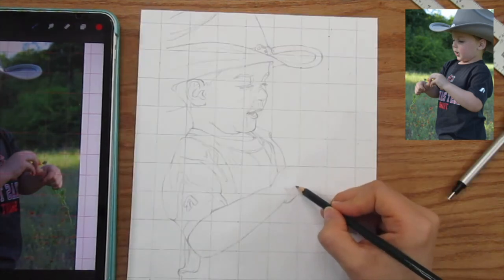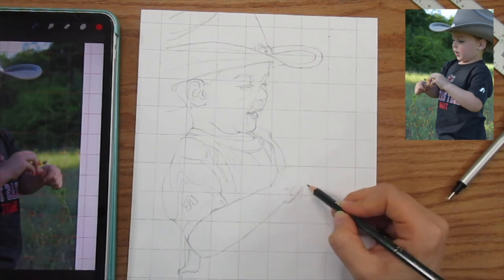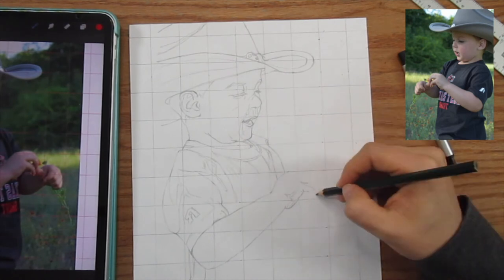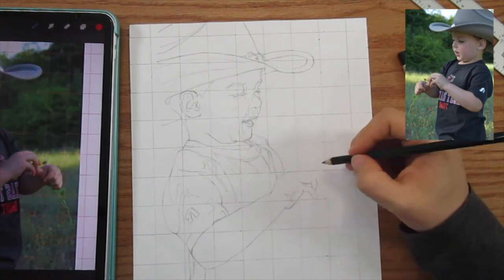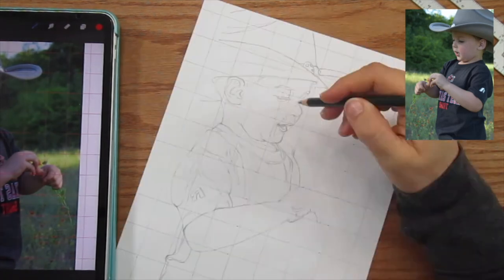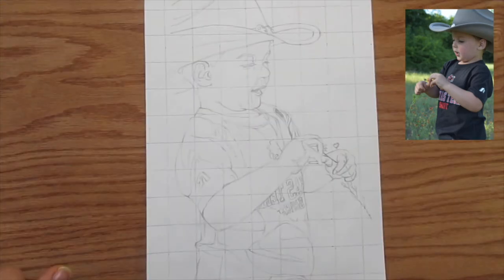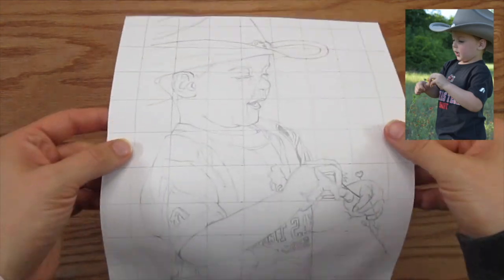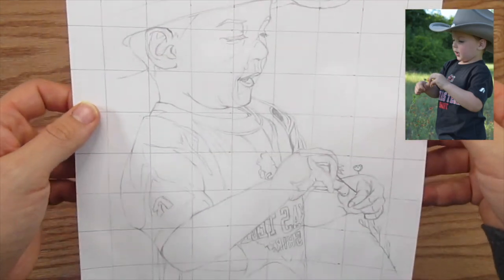If you're just starting out, just do your best, focus on one square at a time, and it'll all come together in the end. So this is my finished preliminary sketch on the printer paper with the grid still on it.